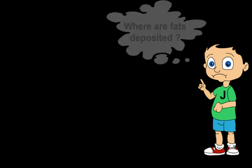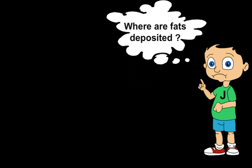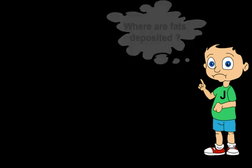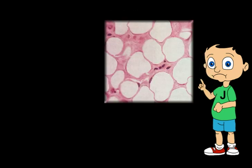Now, do you know where fats are deposited? Adipose tissues are tissues in which fat is deposited as fat globules. They protect the body from cold by providing an insulating layer.